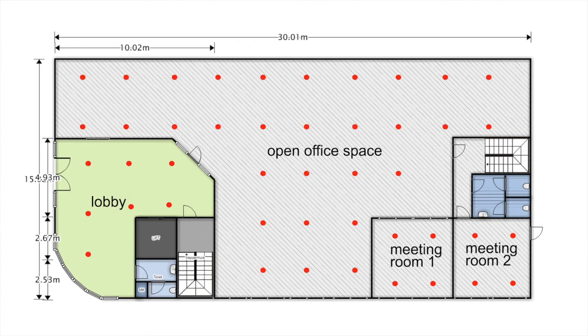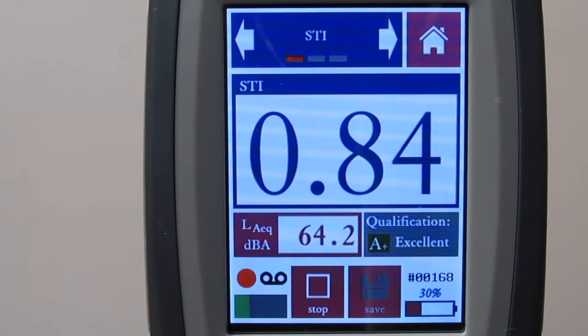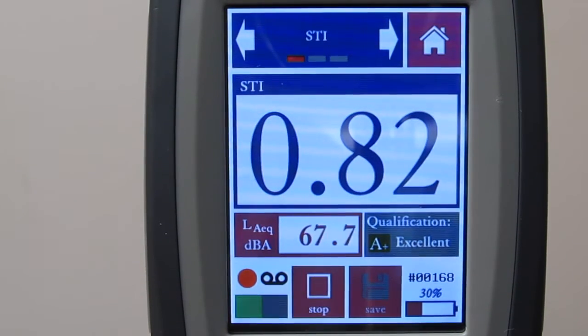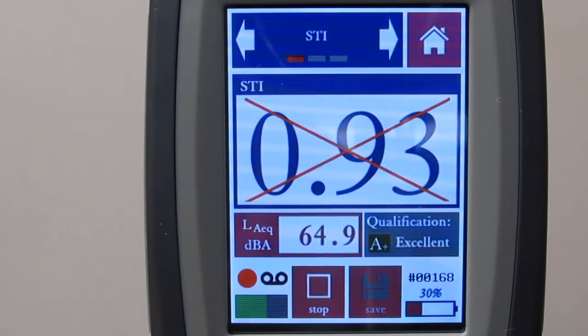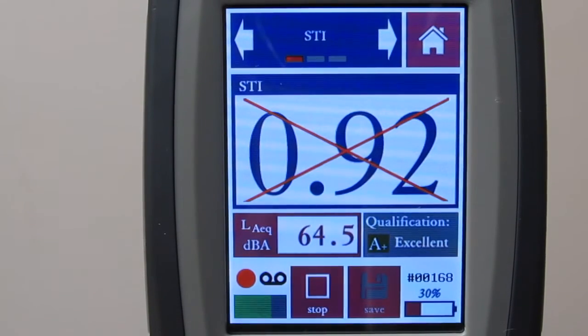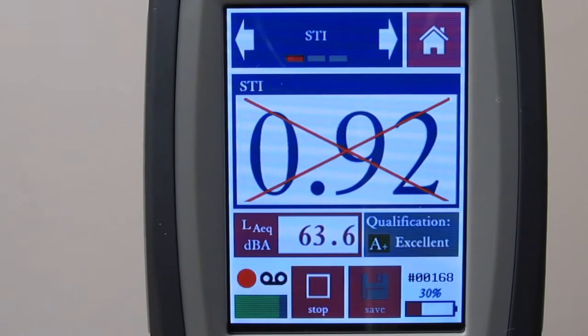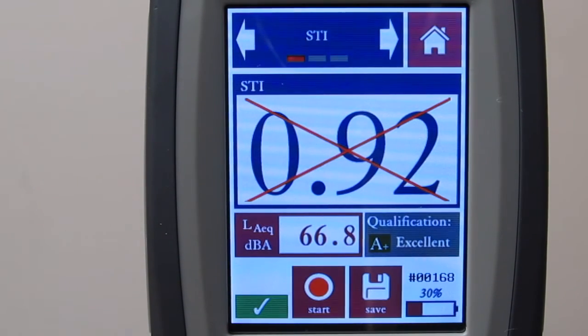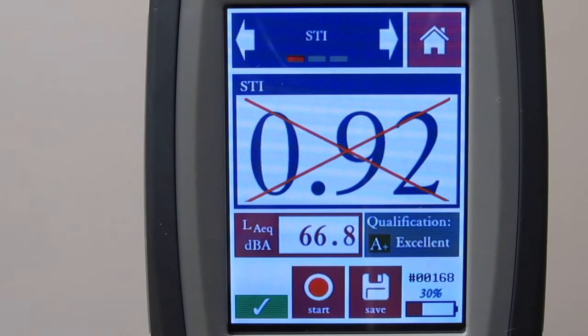The STIPER method does not deal well with impulse noises, such as slamming doors. If this happens, discard the measurement and start a new one. If the STIPER analyzer detects an invalid measurement, the STIPER result will be crossed out.